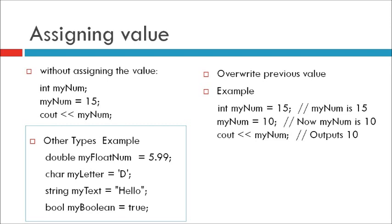Other types to declare variables: integer myNumber equals 5, double myFloatNumber equals 5.99, character myLetter equals D, string myText equals Hello, bool myBoolean equals True.